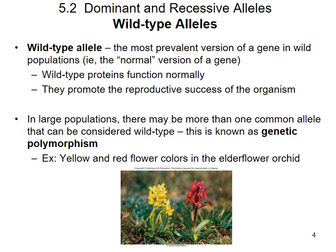Instead of always using dominant and recessive expressions, we can use terms like wild type versus mutation, which gives us more flexibility. The wild type allele hints toward the most commonly seen, most prevalent — what we call the normal version of the gene. As populations of organisms get larger, you actually see multiple alleles that can be classified as wild type.